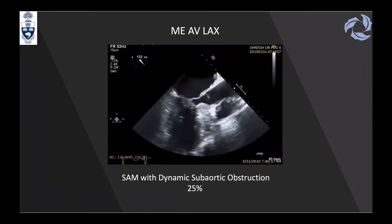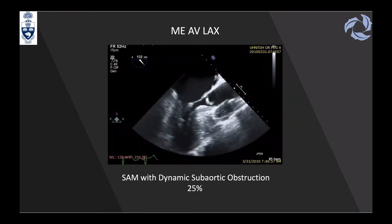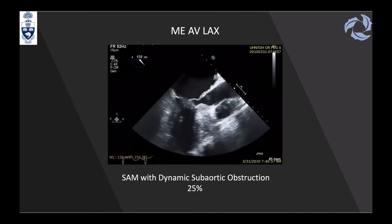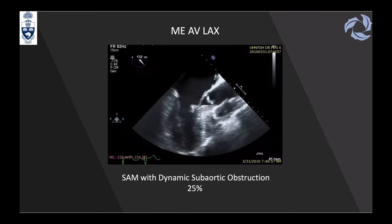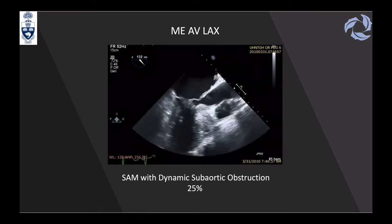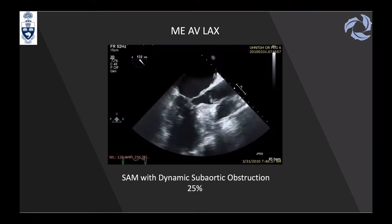Evaluation of HCM requires determining if dynamic LVOT obstruction is present, seen in up to 25% of patients. As seen in this example, once the mitral valve closes, the anterior mitral leaflet can touch the septum and occlude the LVOT. The aortic valve can be seen flickering—opening and closing repeatedly—due to this dynamic obstruction.